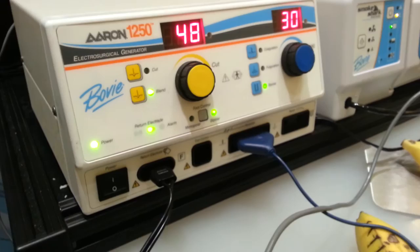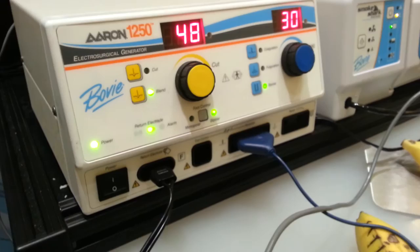Finally, the 1250 is an all-purpose generator, and it will allow me to basically do from nose jobs on pugs to declawing of cats, taking out large masses out of the animal. It's an all-purpose generator.